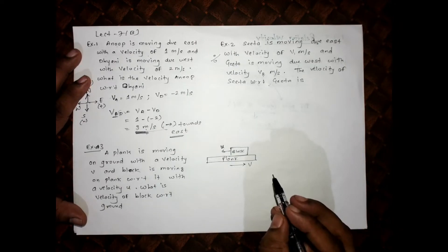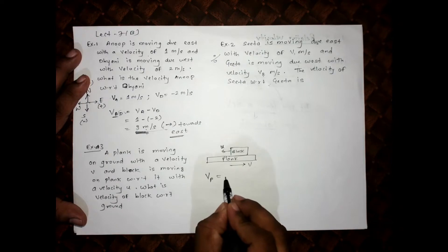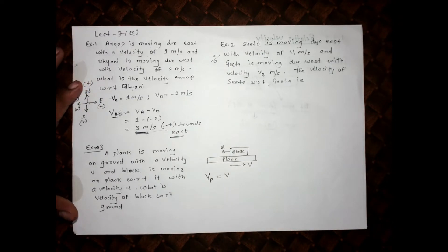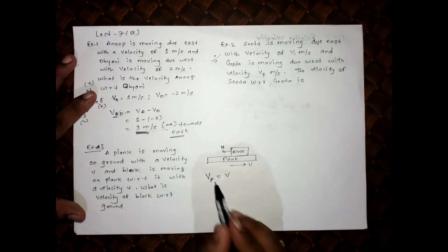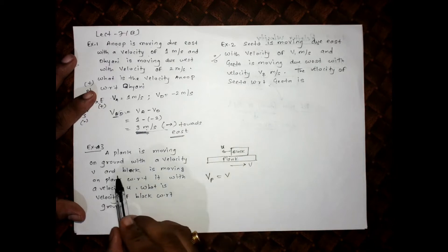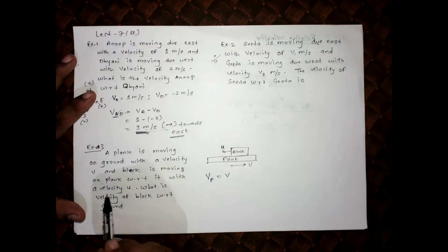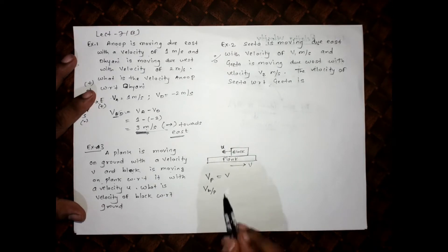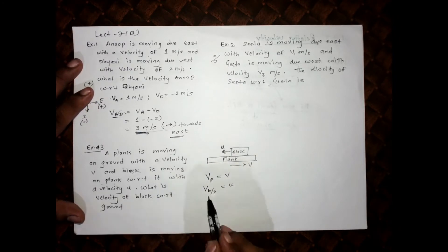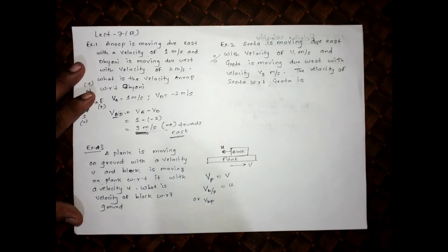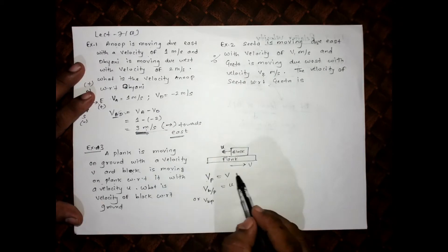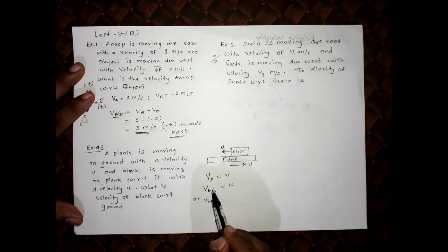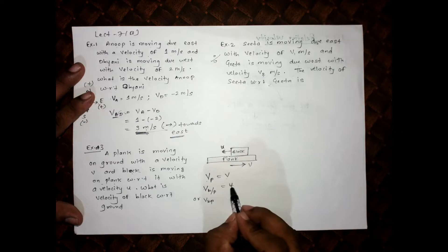The plank's velocity with respect to ground is V — I will write Vp for that. A block is moving on the plank with a velocity U. The direction of U is shown in the diagram. The velocity of the block with respect to the plank is U in one direction; since the diagram shows it going the other way, it is minus U.